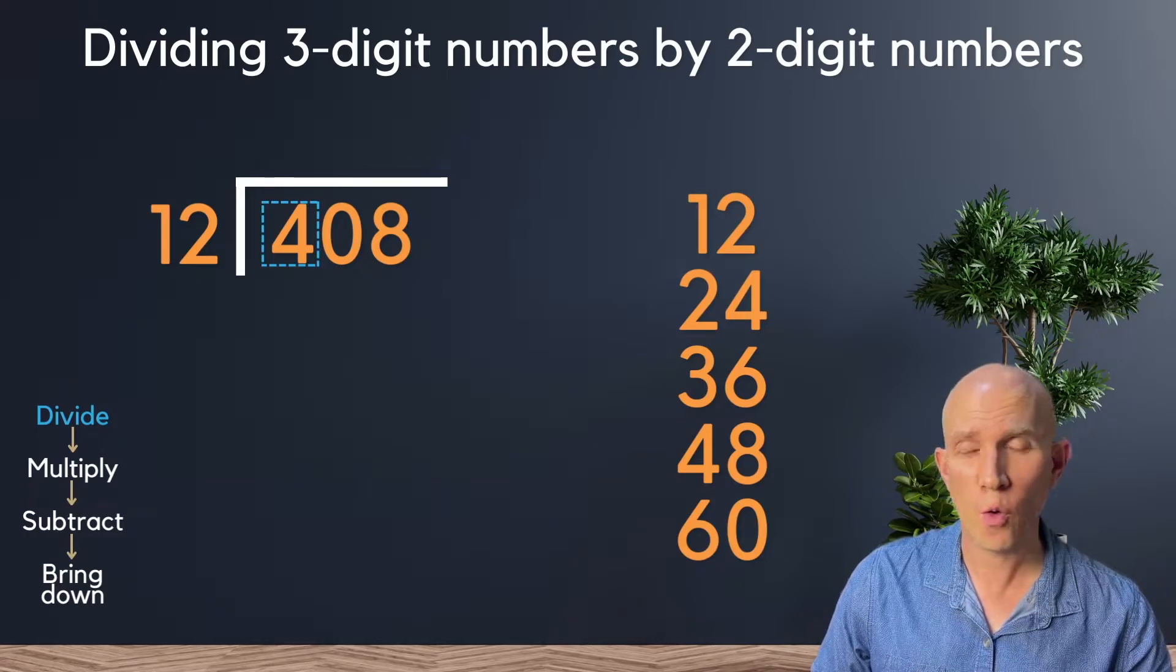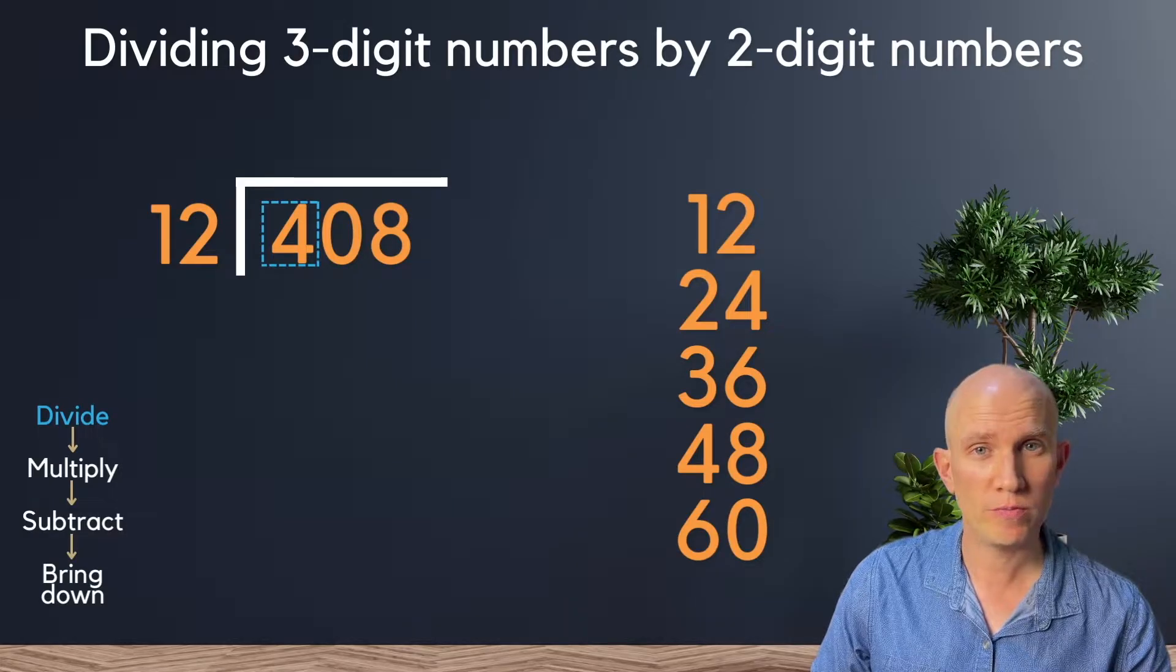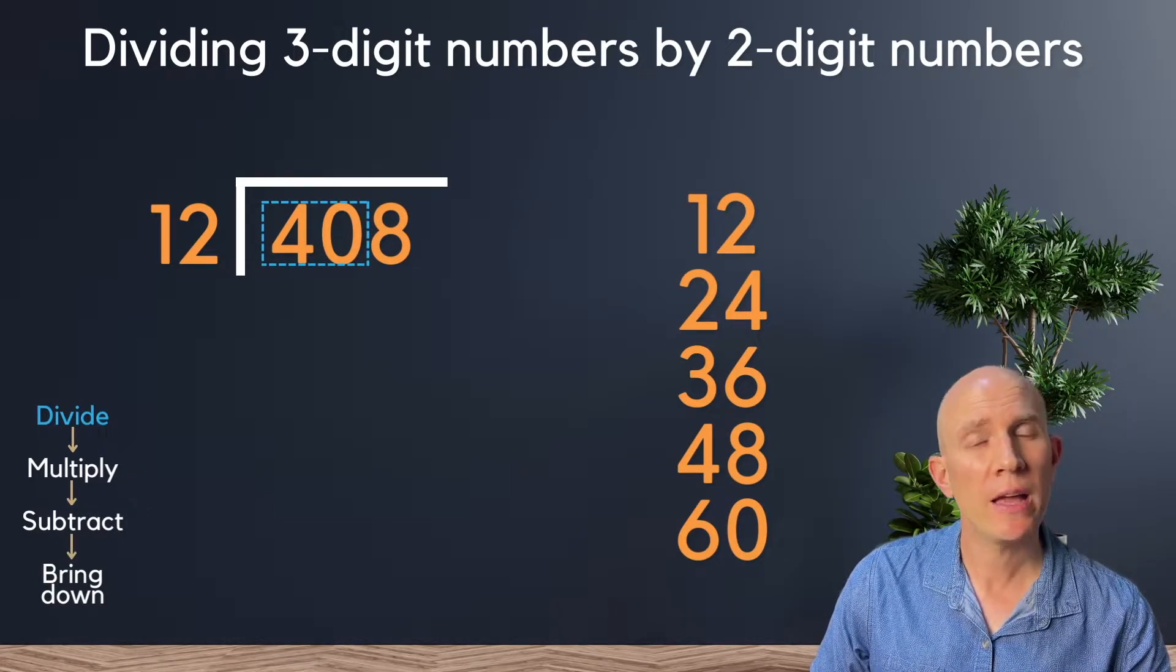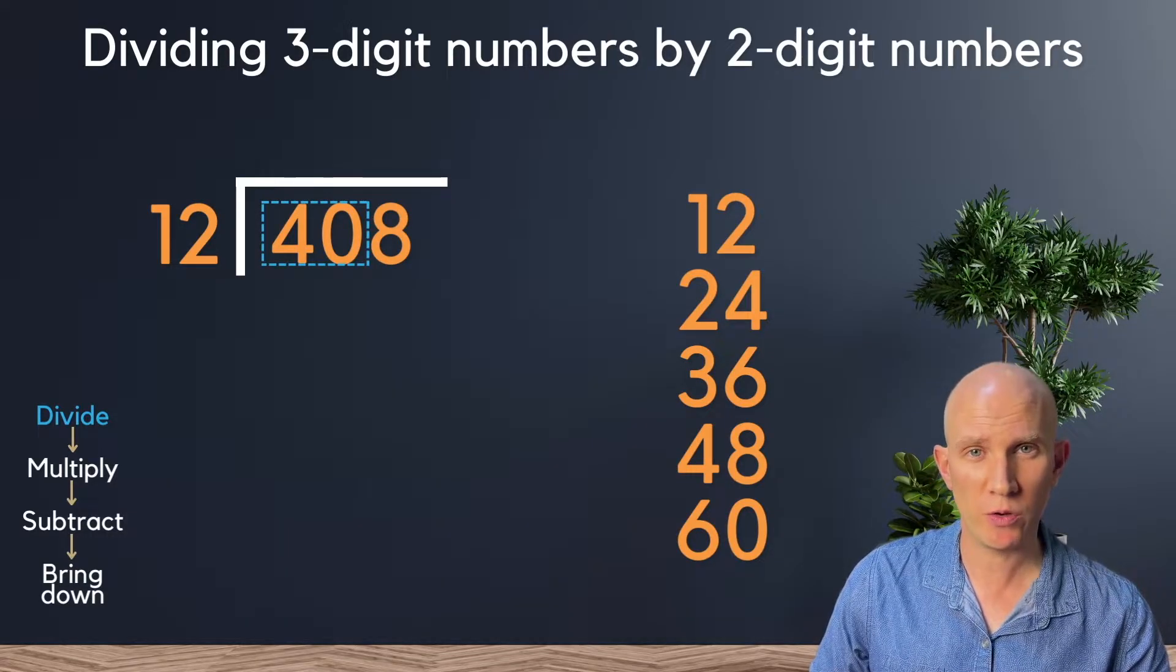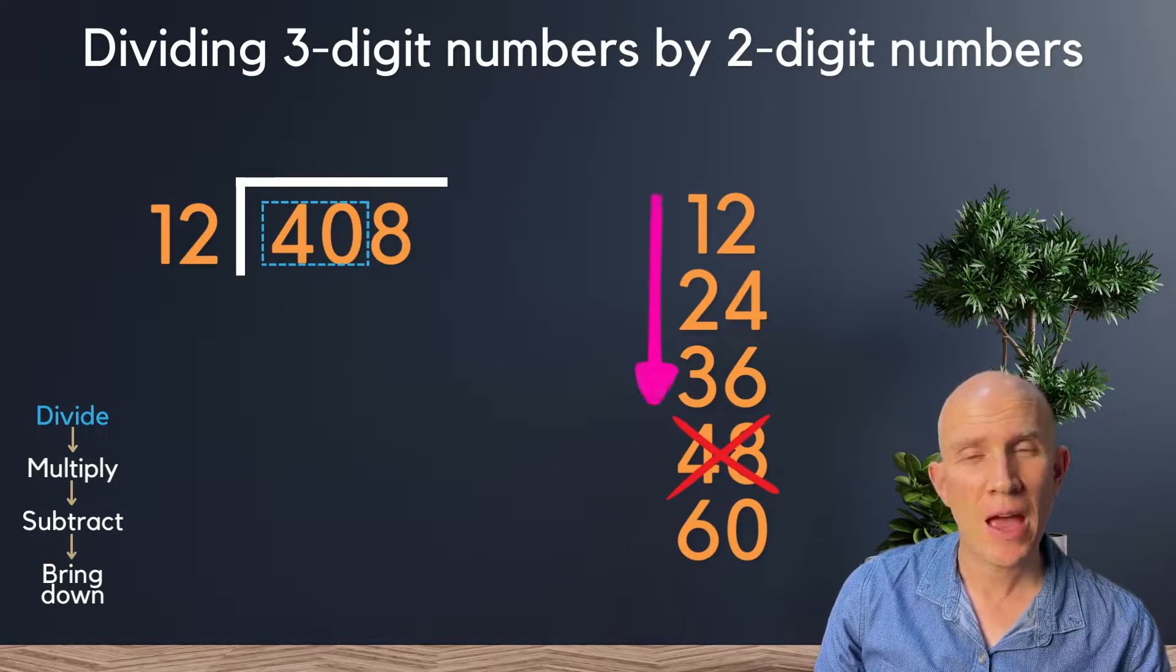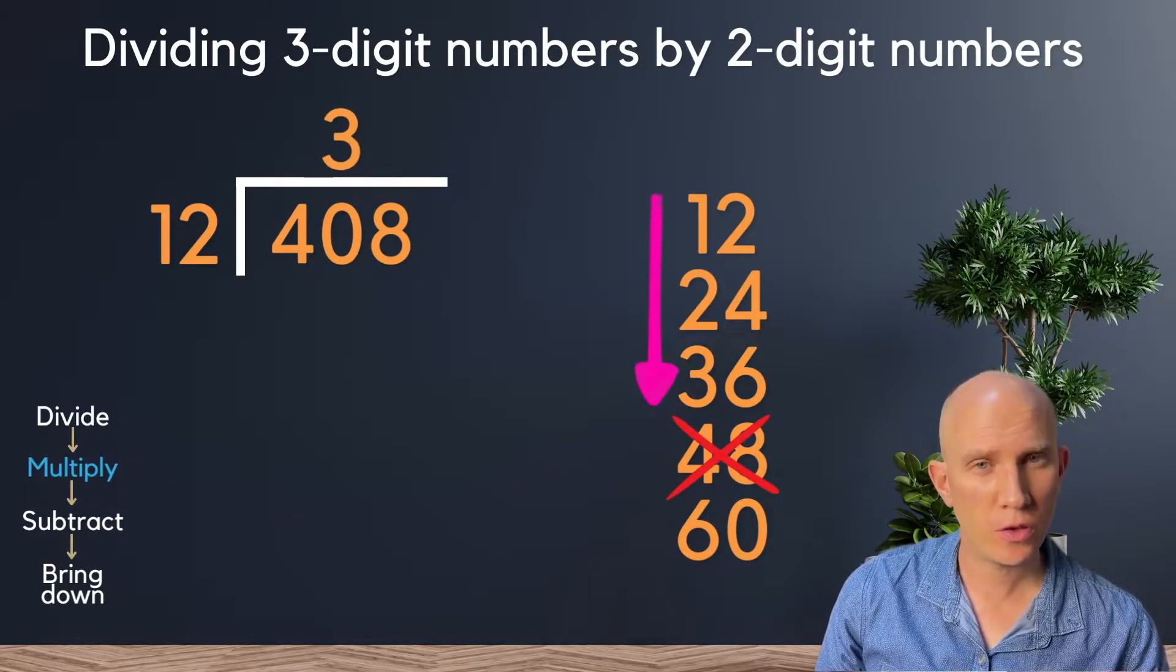So we're going to say, can 4 be divided by 12? No, it can't. So we expand it and say, can 40 be divided by 12? And from my times tables, we can see that yes, it can. And the answer is 3.